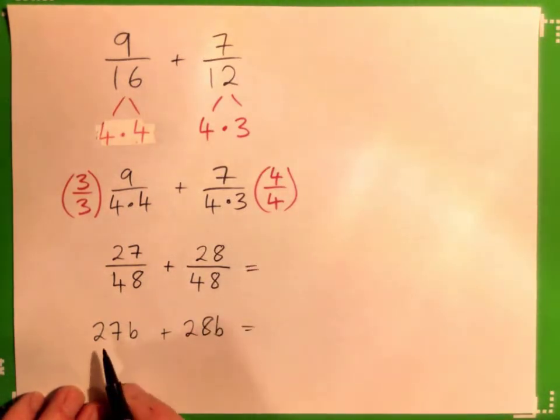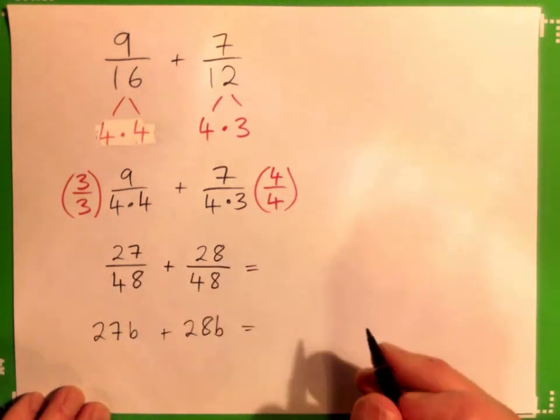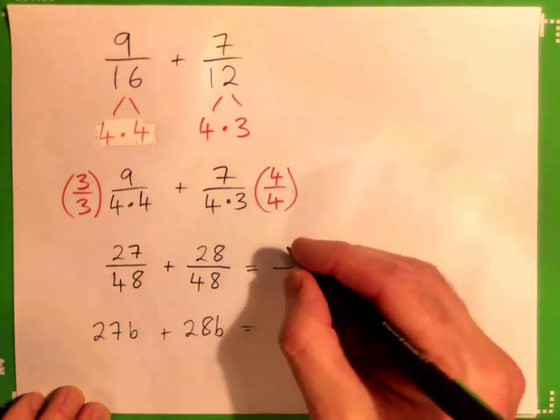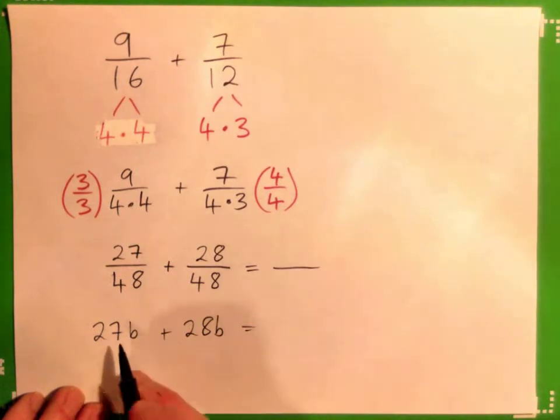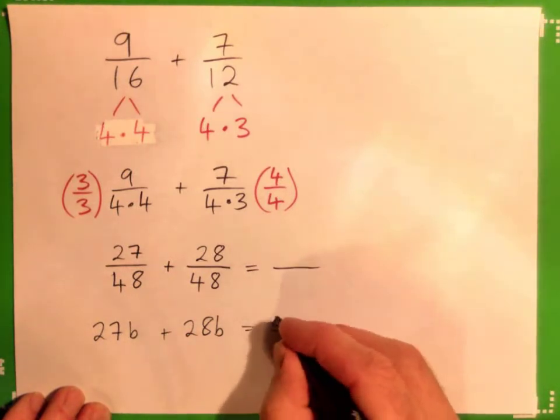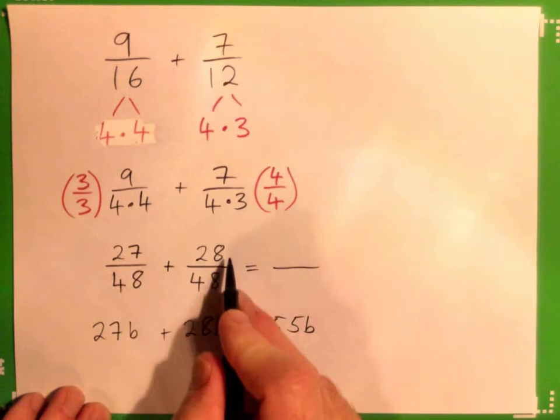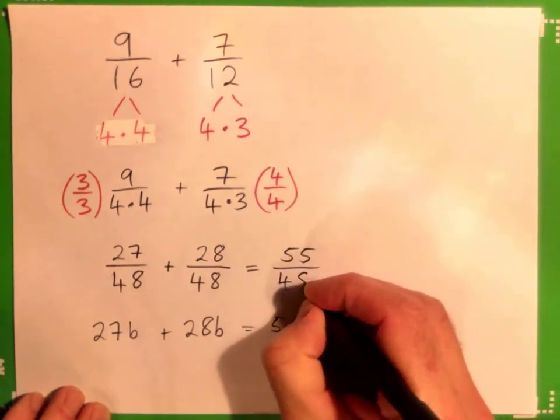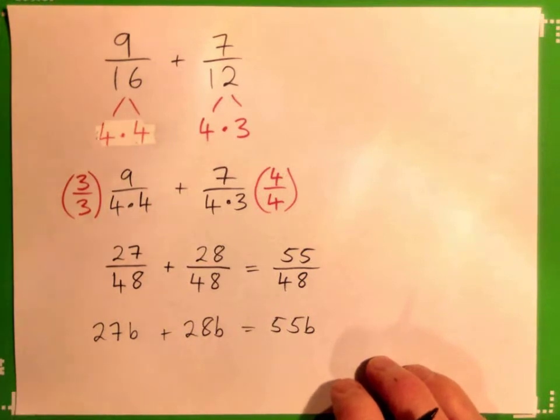Well, in fact, add 27 and 28 and you get what? 55, exactly. So it's 27 bananas, 28 bananas, it's kind of like having 55 bananas. 27 forty-eighths plus 28 forty-eighths is like having 55 forty-eighths. Good.